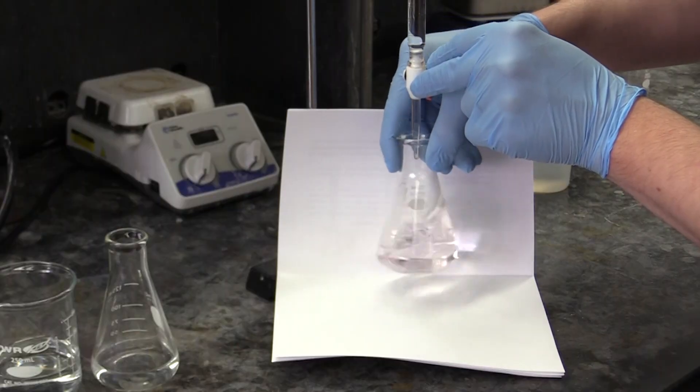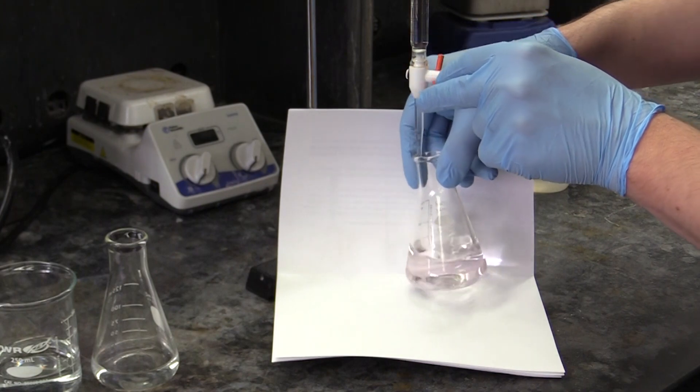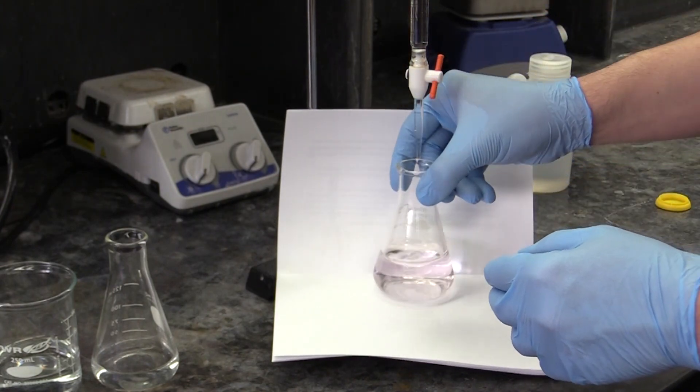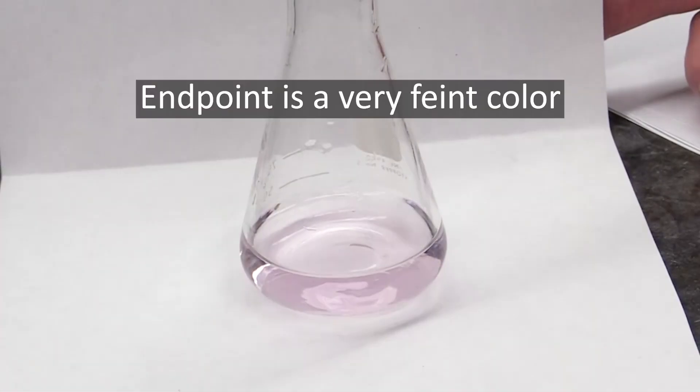For the titration itself, you will use a burette to add sodium hydroxide solution to the flasks until you reach the titration's endpoint, which in this case is when it turns a very faint magenta or pinkish color.